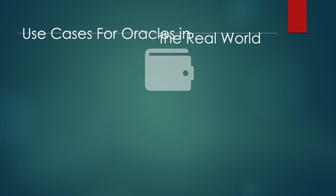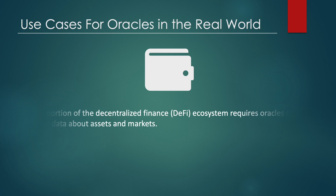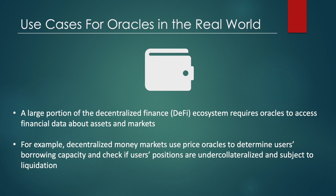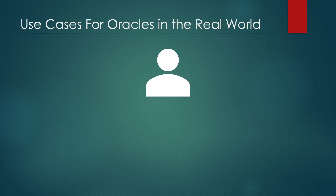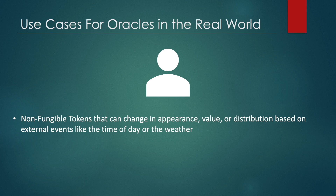Now let's look at some real-world use cases of blockchain oracles. Oracles can be used in decentralized finance, or DeFi — a large portion of the DeFi ecosystem requires oracles to access financial data about assets and markets. For example, decentralized money markets use price oracles to determine users' borrowing capacity and check if users' positions are under-collateralized and subject to liquidation, allowing for more accurate and less risky decisions. Oracles can also enable non-financial use cases for smart contracts, such as dynamic NFTs — NFTs that can change in appearance, value, or distribution based on external events like the time of day or the weather.